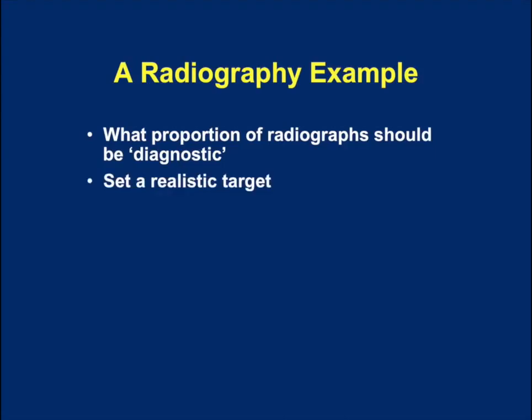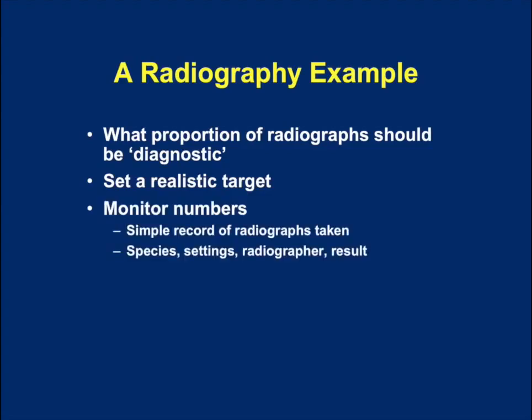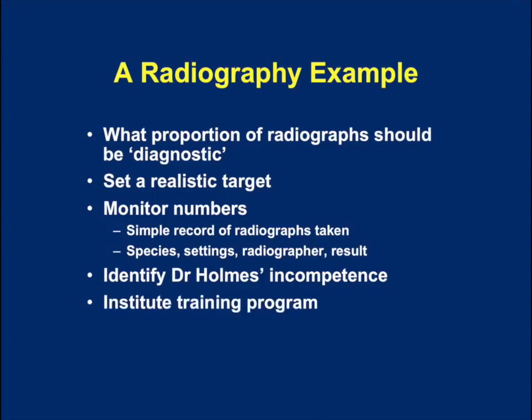If we're going to do this, we should set a realistic target. Is it reasonable to expect 100% of radiographs to be diagnostic? We would say that people doing the radiography in the practice should be roughly equal, and that maybe 85–90% of radiographs are diagnostic. How could we do this? Well, if we simply record the radiographs taken — the species, the settings, the radiographer, and the result (diagnostic or not diagnostic) — we would identify incompetence.